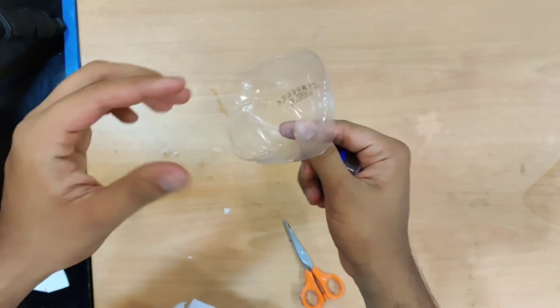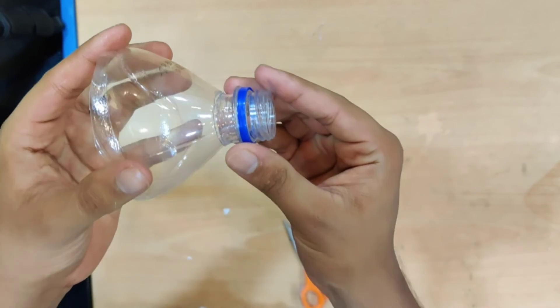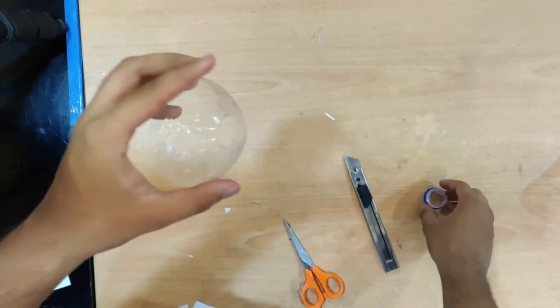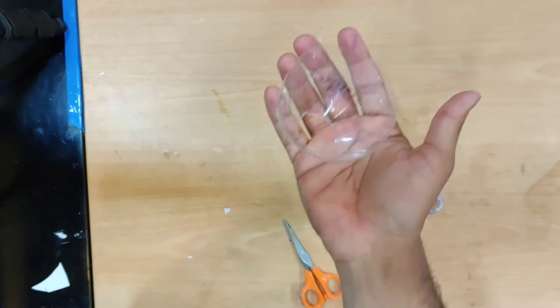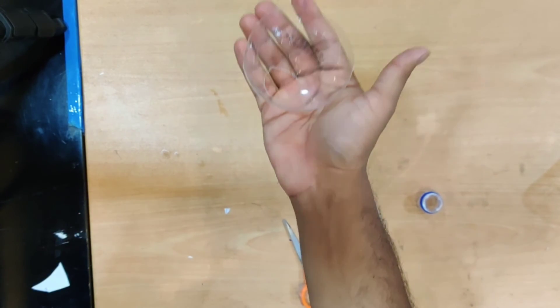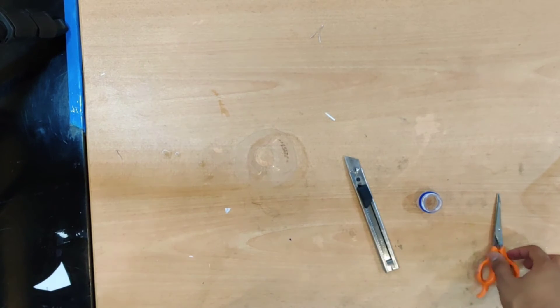Once you heat it up and cut it in, it should get cut exactly here. Now you've got a reflective base which can reflect videos to make it look like holograms.